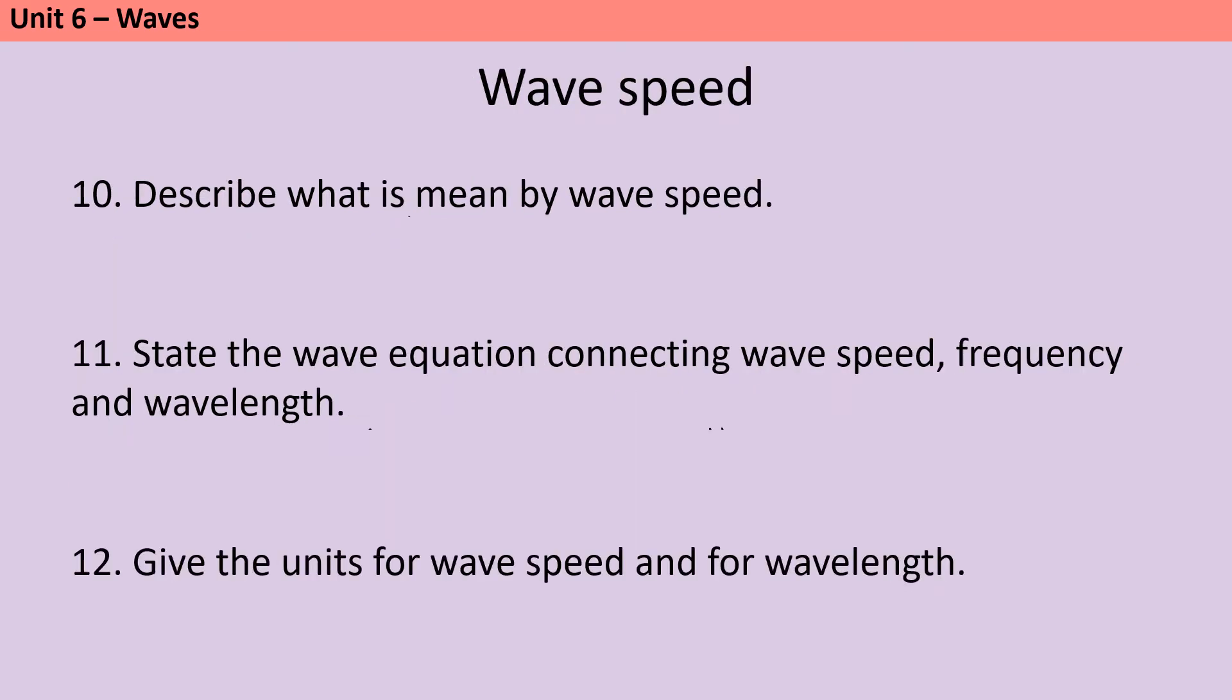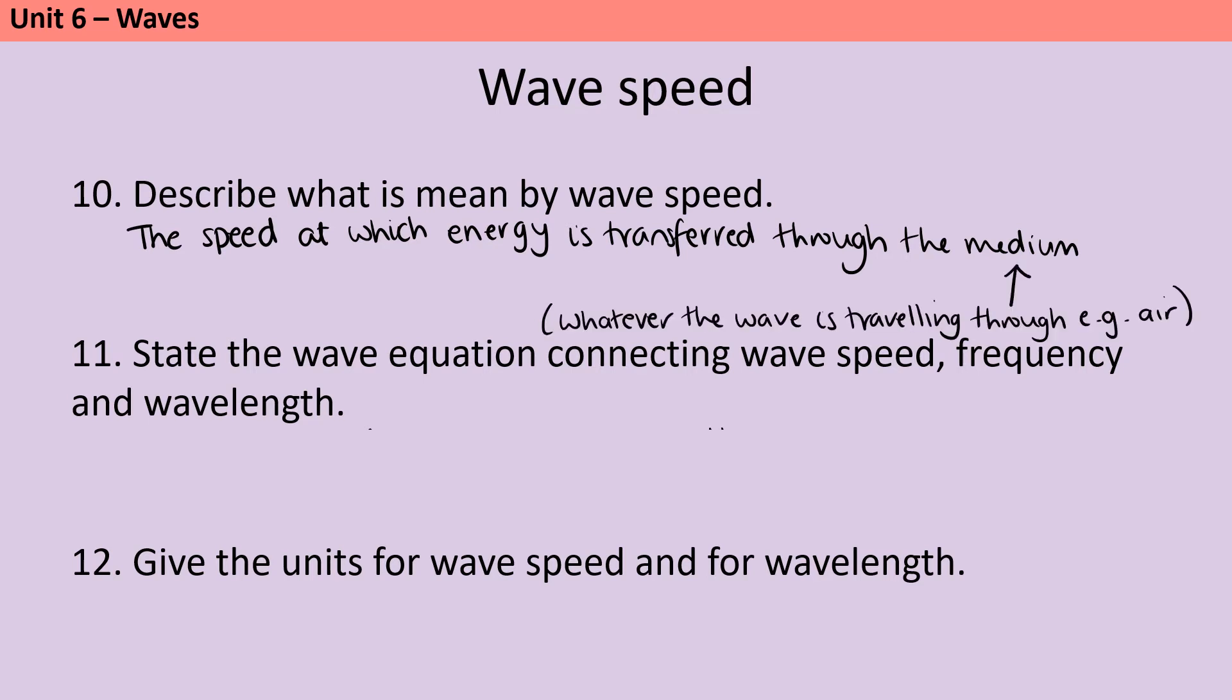All waves transfer energy, so we can think of wave speed as the speed at which that energy is transferred through the medium, and when we say medium we mean whatever the wave is travelling through, so for instance the air. To calculate wave speed you multiply together frequency and wavelength. Wave speed and wavelength are just a speed and a length applied to a wave, so the units are meters per second and meters.